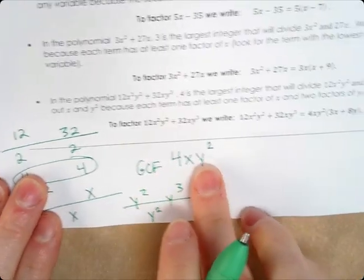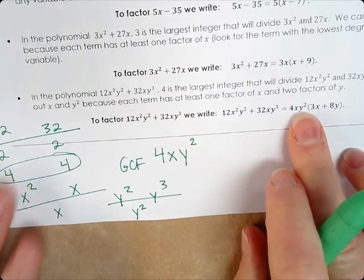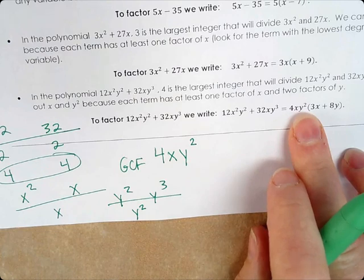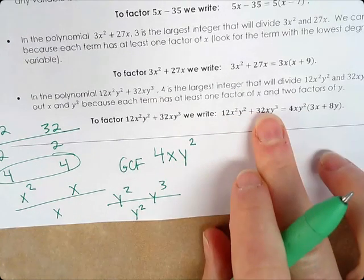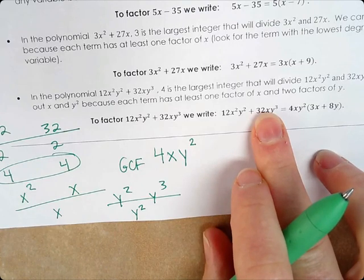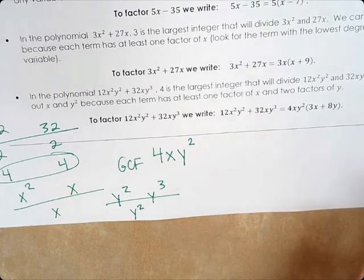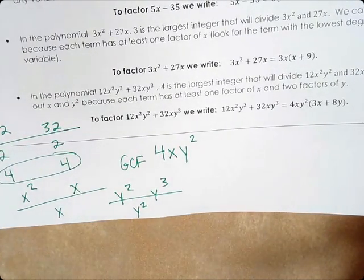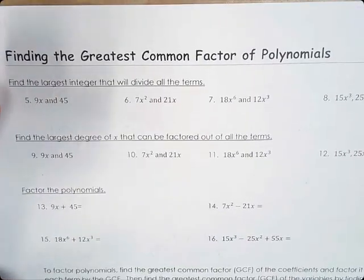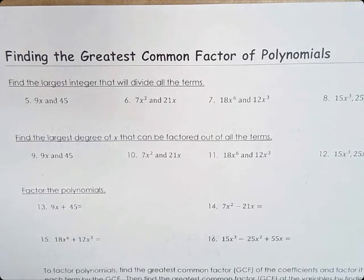Whenever you factor out, you have to think: what do I multiply 4xy squared by to get 12x squared y squared and 32xy cubed? We're going to do several examples because it takes a little while to get the hang of it. Problems 5 through 8 on the back just ask us to find the largest integer that will divide all the terms.